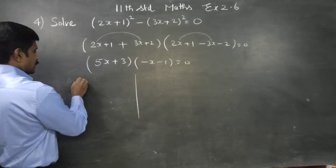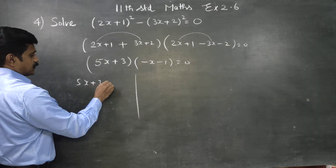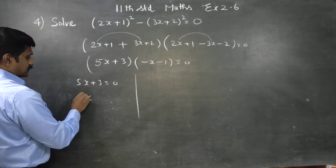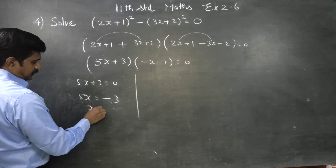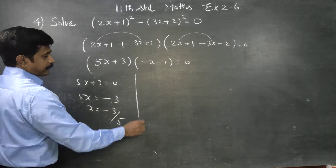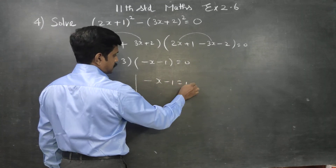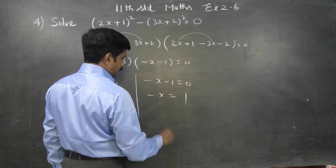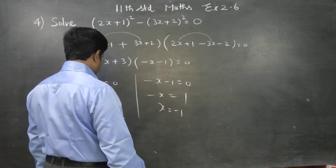Now solving each part: 5x plus 3 is equal to 0, so 5x is equal to minus 3, therefore x is equal to minus 3 by 5. And minus x minus 1 is equal to 0, minus x is equal to plus 1, so x is equal to minus 1.